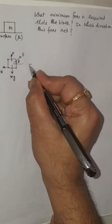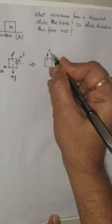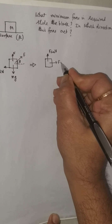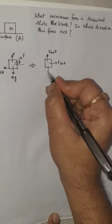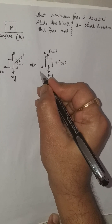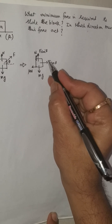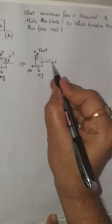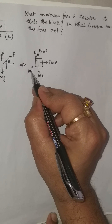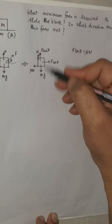We can further modify this: F sin theta acts in the upward direction, F cos theta acts in the horizontal direction, Mg acts downward, normal reaction acts upward, and the limiting friction is mu times normal reaction. Since the block is just on the verge of movement, F cos theta is just counterbalancing mu times normal reaction, so F cos theta equals mu times normal reaction. In the vertical direction, forces are balanced.